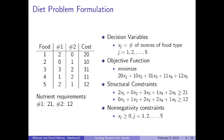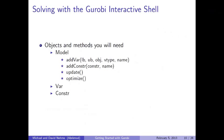Now that we've formulated the diet problem as an LP, let's see how it can be solved using Gurobi. In order to solve any model in the Gurobi interactive shell, there are three objects you need to know: the model, var, and constr objects. The model object is a repository for all data pertaining to the model. The addVar method creates decision variables and takes up to five parameters: a lower bound, upper bound, objective function coefficient, variable type (vtype), and a name.